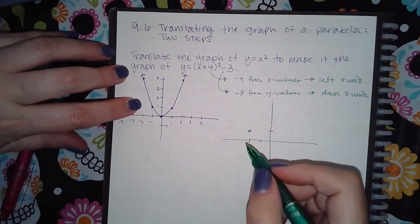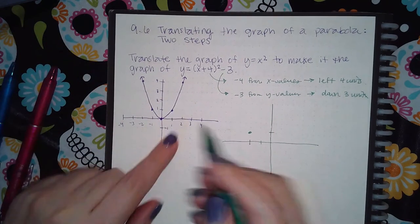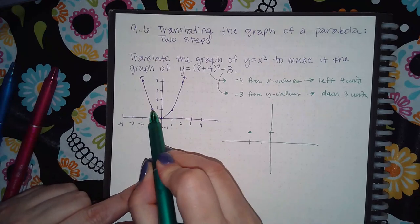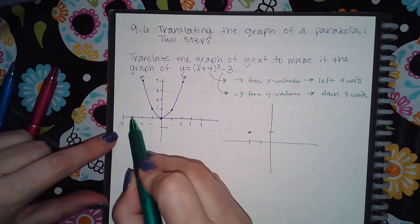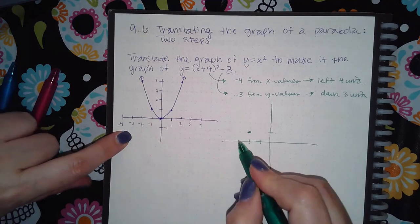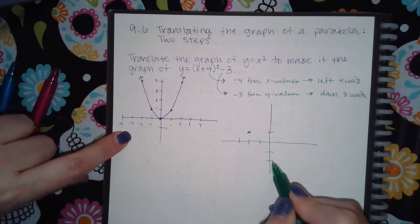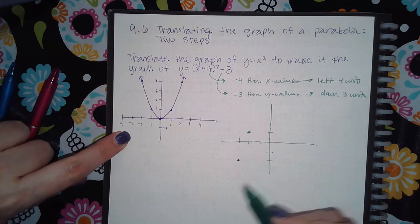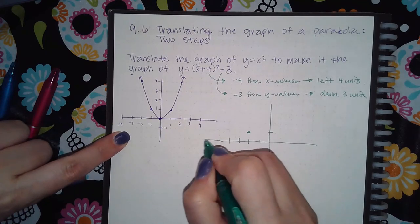Now on the next point at 1, 1, I'm going to move it left 1, 2, 3, 4, and then 1, 2, 3 down, so I'm over here at negative 3 and negative 2. Then I'm going to keep going in this manner.